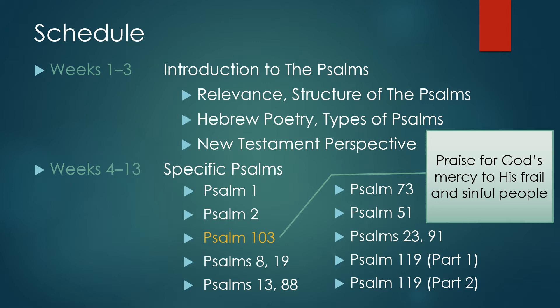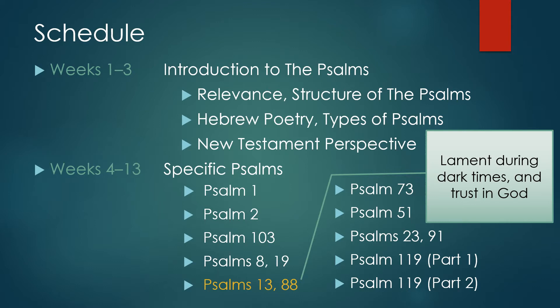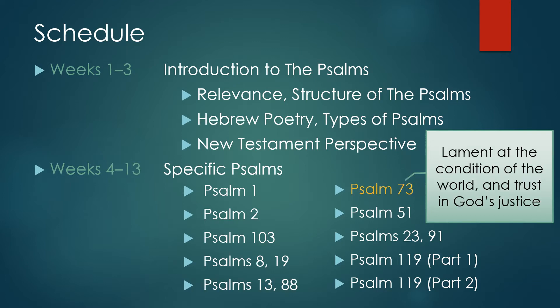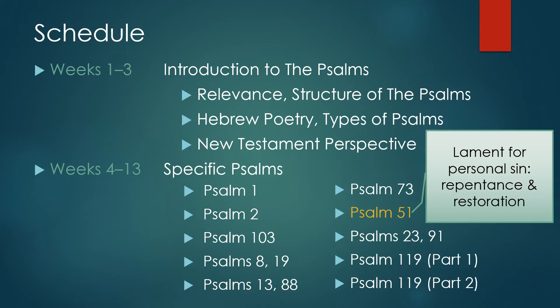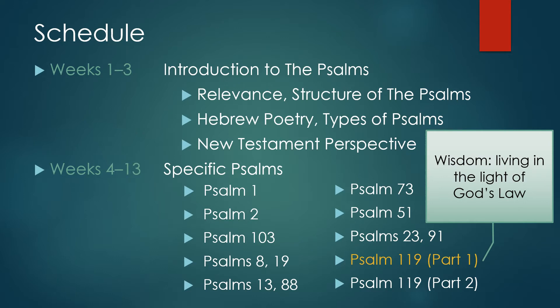We started looking at some praise psalms. Psalm 103 is a praise for God's salvation and mercy to his frail and sinful people. Psalms 8 and 19 are praise psalms praising God as creator and lawgiver. Then we switched to lament psalms — Psalms 13 and 88 are laments during dark times, Psalm 73 is a lament about the wicked prospering, Psalm 51 is a lament for personal sin. Psalms 23 and 91 are psalms of confidence in God's protection, and we ended with Psalm 119, a wisdom psalm.